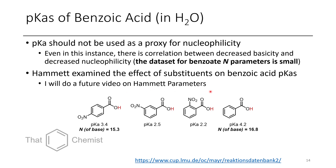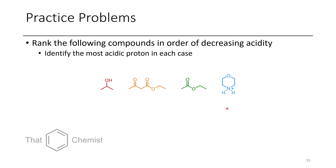Hammett is a researcher who examined the effect of these substituents on benzoic acids. In the future I'll do a full video on Hammett parameters — since this video is already getting kind of long, I'd like to keep that as a separate topic. For this lecture, I'd like to assign three practice problems. First, with each of these four compounds, rank them in order of decreasing acidity and identify the most acidic proton in each molecule.